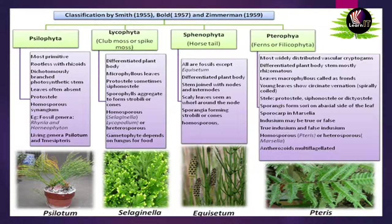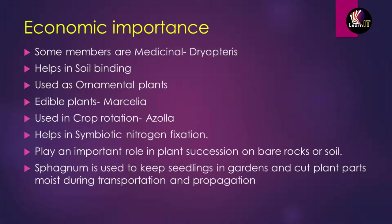Young leaves in Pteropsida show circinate venation, meaning their leaves are spirally coiled. Now for economic importance: Dryopteris has medicinal properties. Pteridophytes help reduce soil erosion through soil binding. In some parts they are used as ornamental plants, and some are edible — for example, Marsilia.